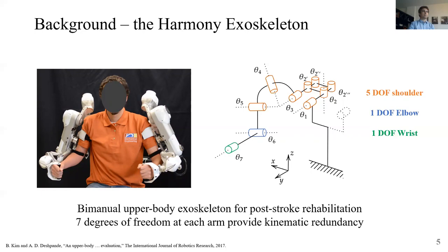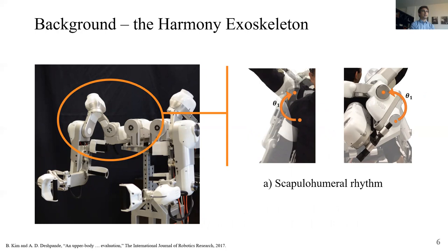The Harmony exoskeleton also presents two different constraints that we need to add to the inverse kinematic problem. The first one regards the so-called scapulohumeral rhythm. That means that when we raise our arm the center of rotation also is elevated and in Harmony, Theta-1 activates this movement and its motion depends on the configuration of the other joints. That's why we talk about joint coordination.